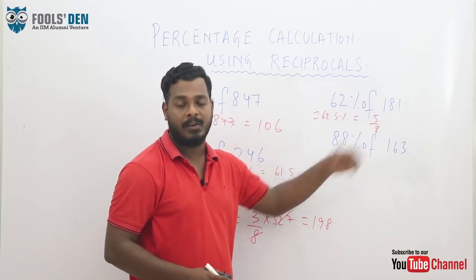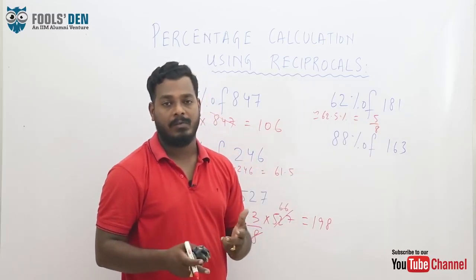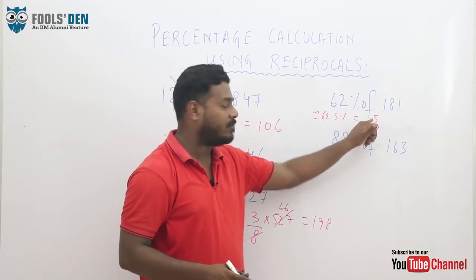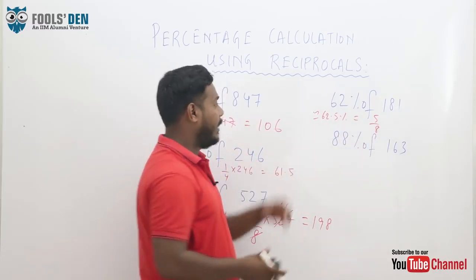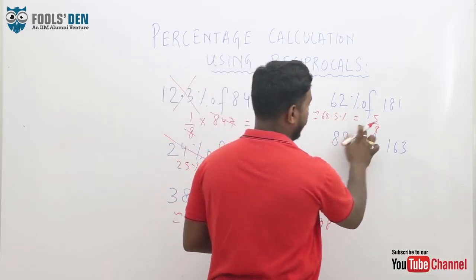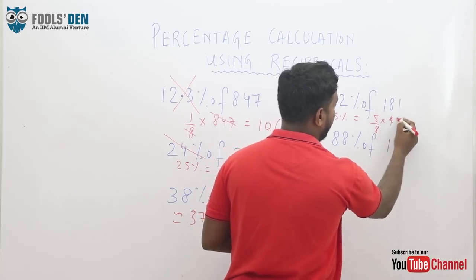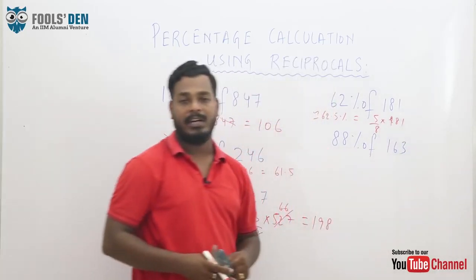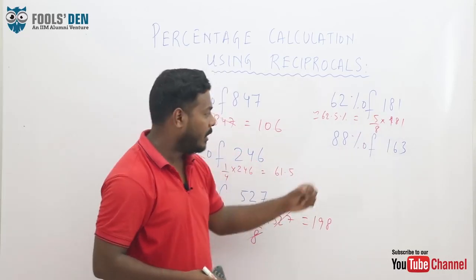How did I do it? Same funda. 1 by 8 is 12.5. Multiply it by 5. You will get 62.5, which is 5 by 8. So 5 by 8 of 181 can be calculated easily. You can calculate this quite easily.